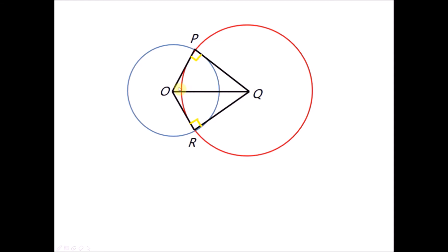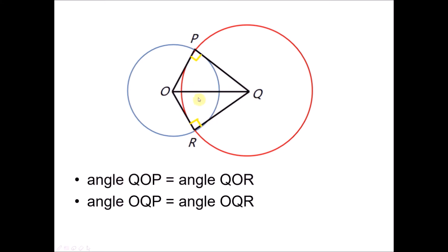When we measure angle Q-O-P, we find that it equals angle Q-O-R. And when we measure angle O-Q-P, we find it has the same value as angle O-Q-R. Lastly, because PQ is the radius of the red circle and RQ is also the radius of the red circle, PQ equals RQ.